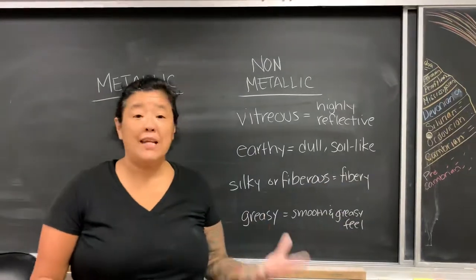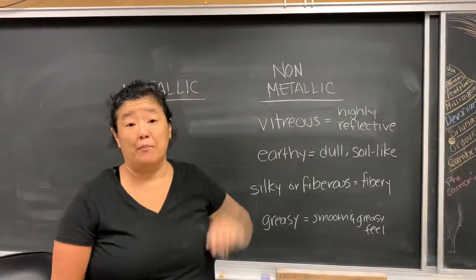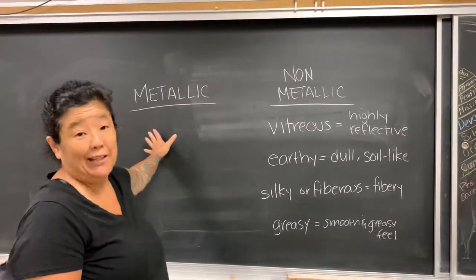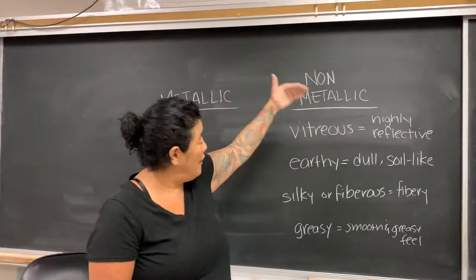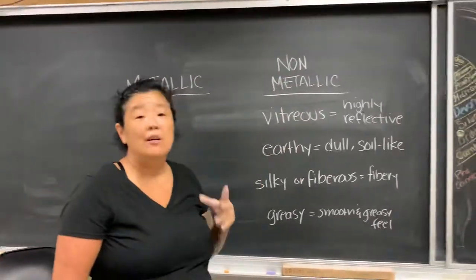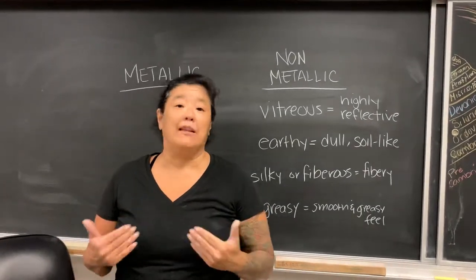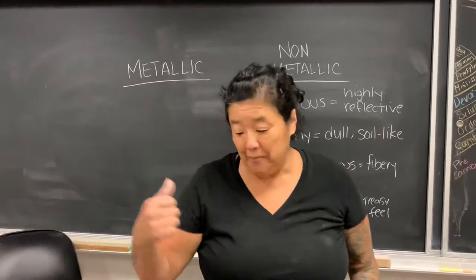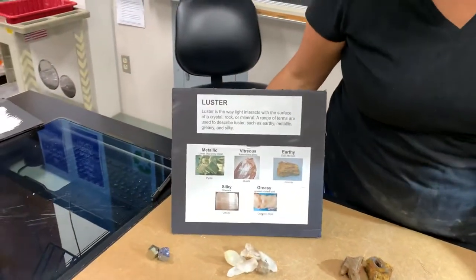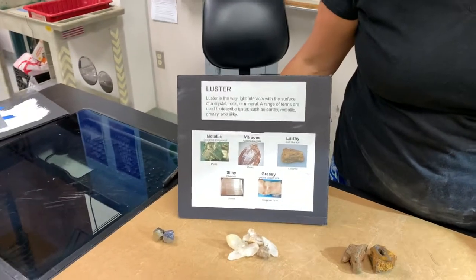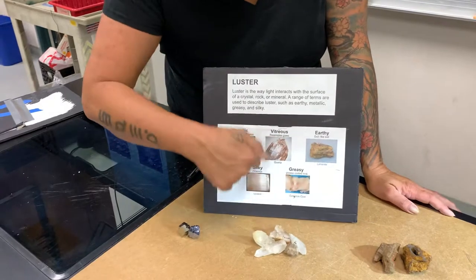The first category is really simple: is it metallic or is it non-metallic? If it's metallic, then we leave it alone and that's how we call it. But if it's non-metallic, we want to subcategorize it into different terms to describe what that non-metallic surface looks like. I have an artboard here showing some of the most common lusters you'll find on minerals — the metallic one is here, and the rest are all non-metallic.